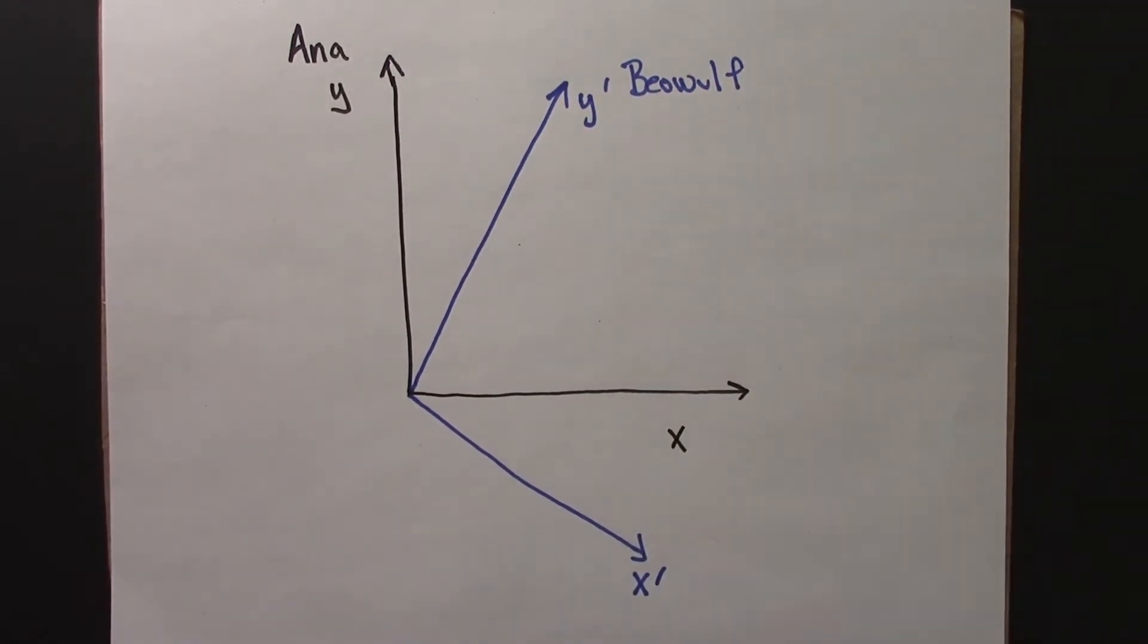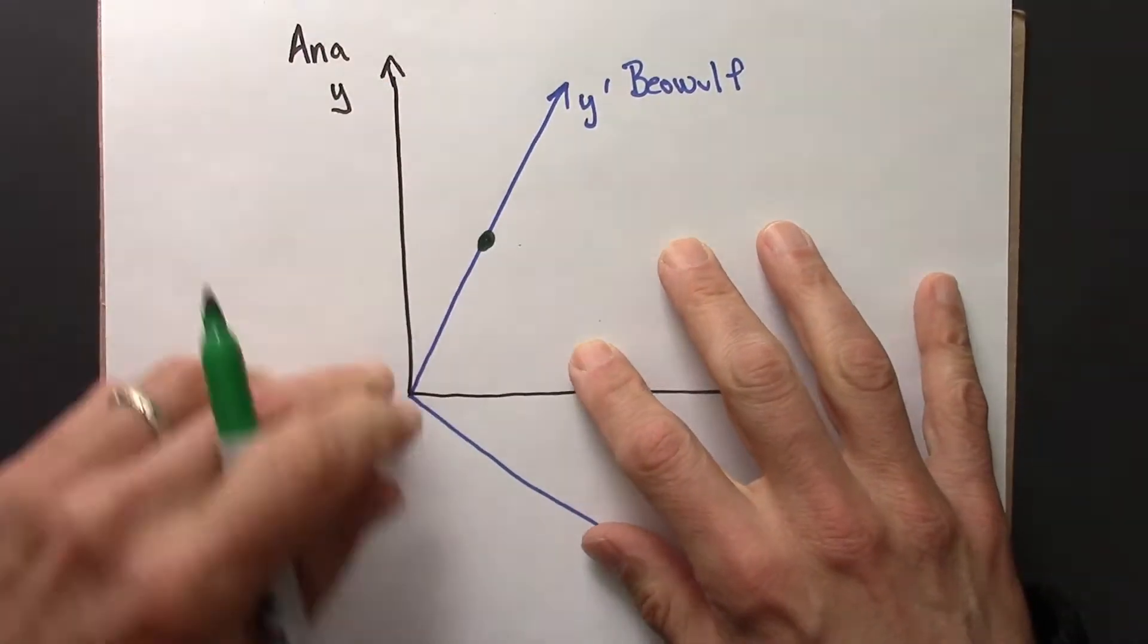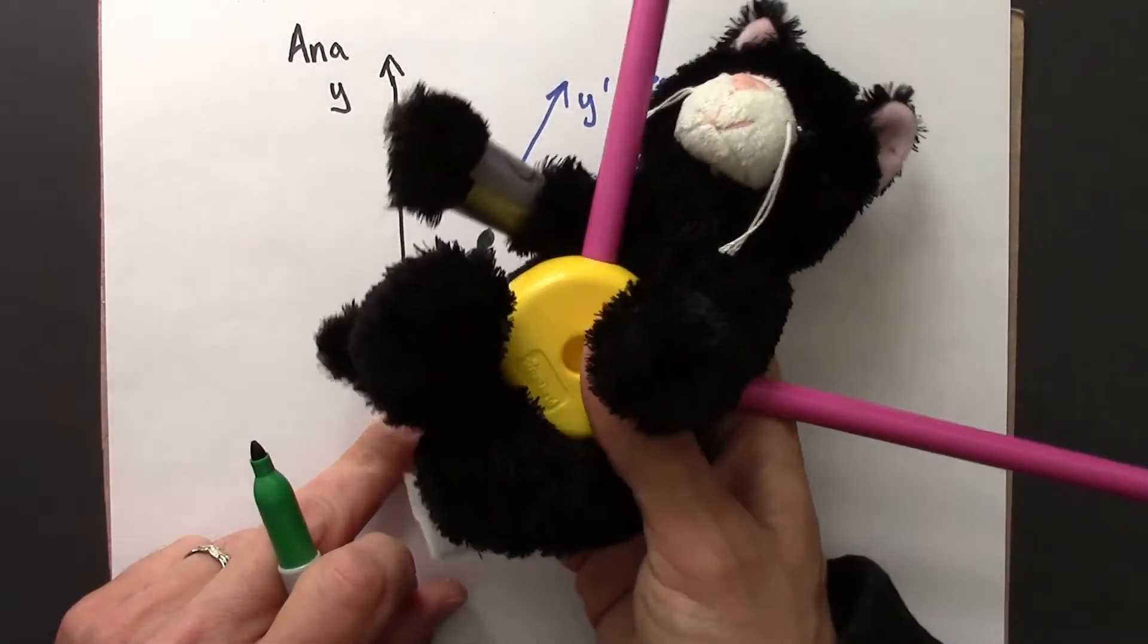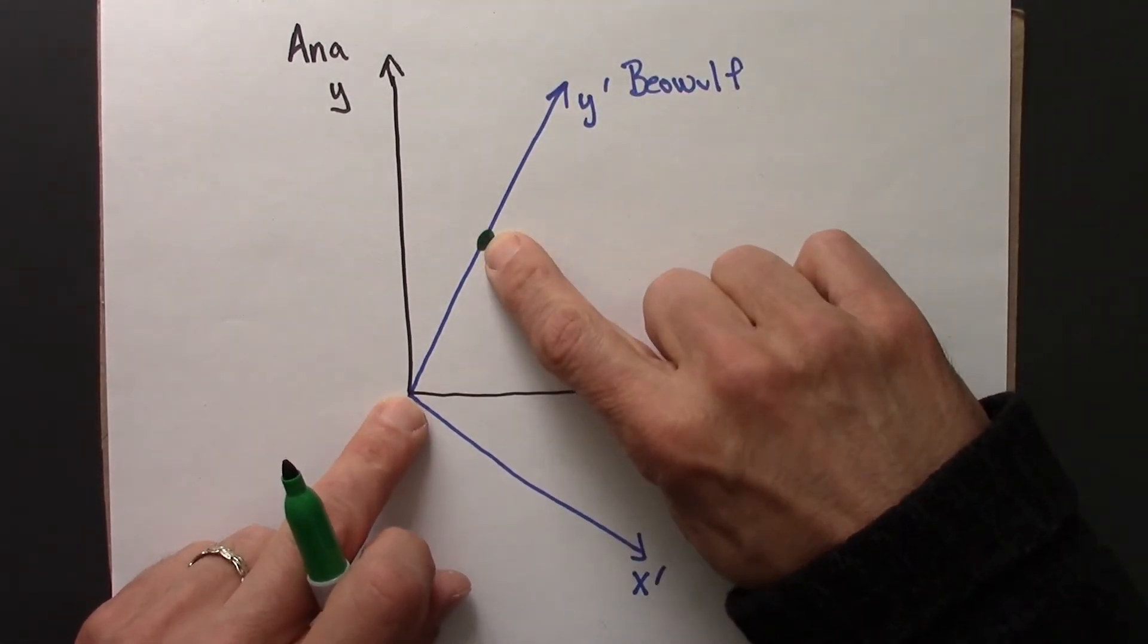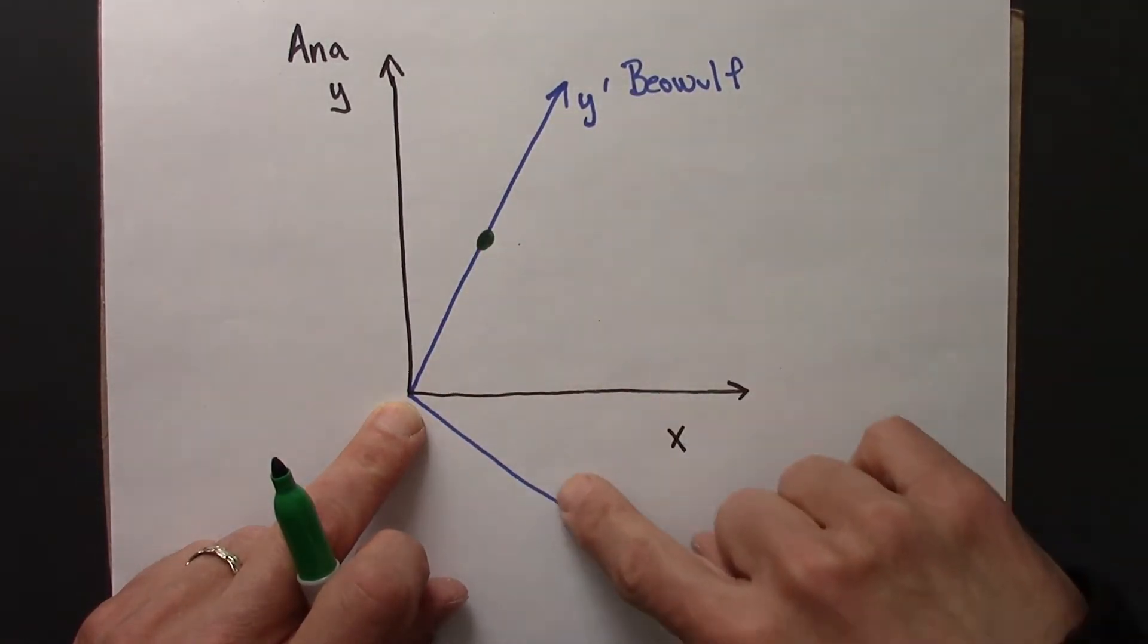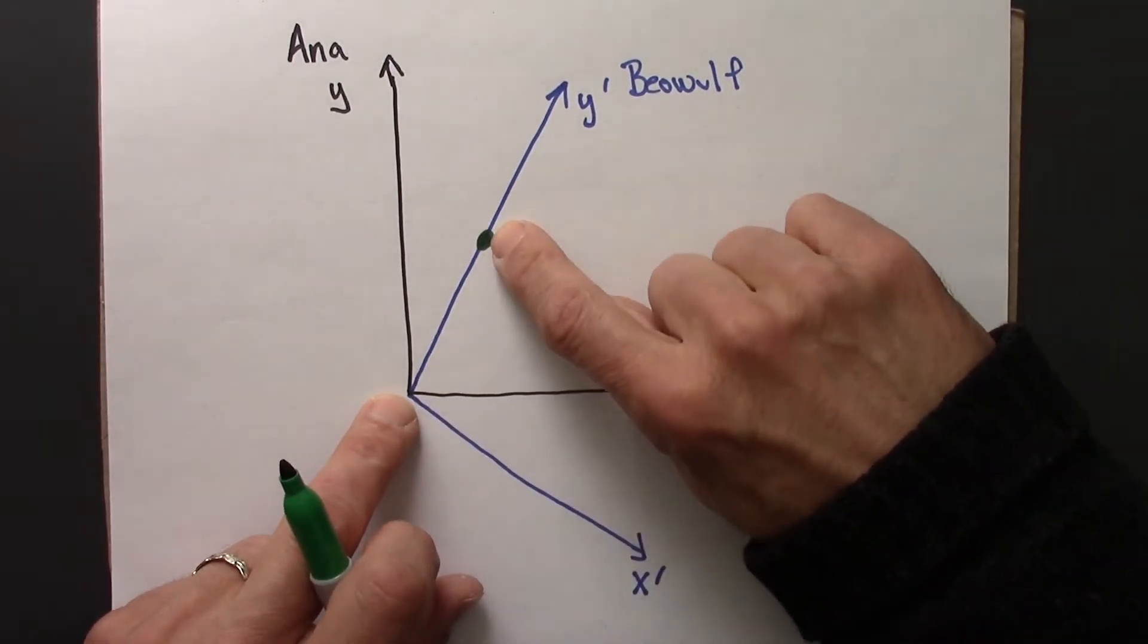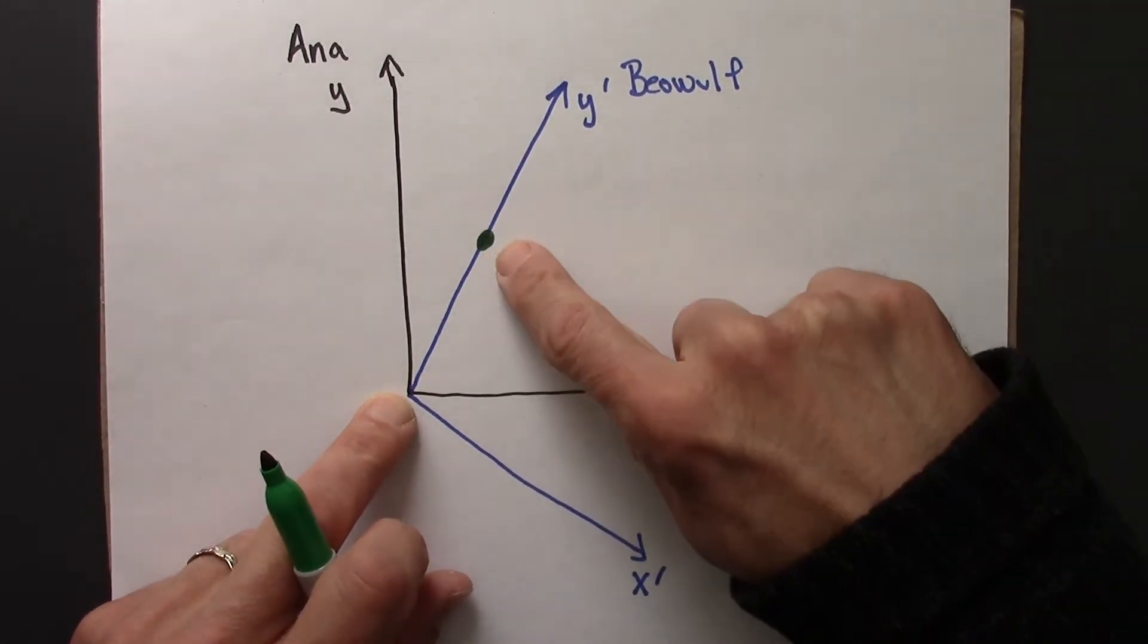So let's say that Beowulf has some point in space, which I'll draw with a green dot. And Beowulf, according to his axis, says this point is one meter from the origin, and it's all on the y-axis. There's no zero x-axis here. And so Beowulf would also say the distance from the origin to the green dot is one.